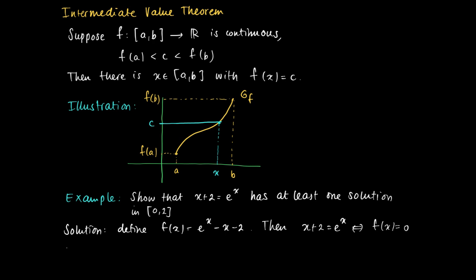Now look at the value of the function in 0. The value of the function in 0 clearly is -1, and the value in 2 equals e^2 - 4, which is larger than 0.